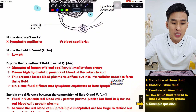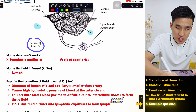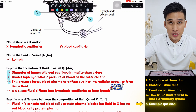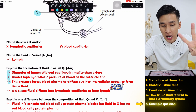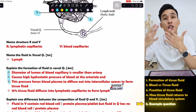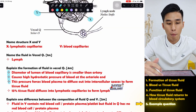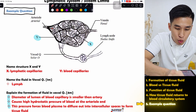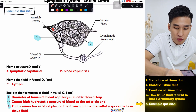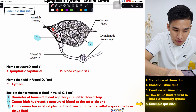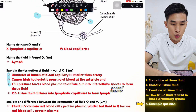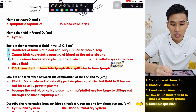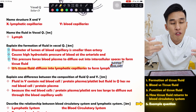For the question about formation of fluid in vessel Q — how do I form lymph? First you have to mention how tissue fluid is formed: the diameter size difference causes high hydrostatic pressure, forcing fluid out. Once forced out, tissue fluid is formed. Then you mention that the 15% of tissue fluid that diffuses into lymphatic capillaries forms the lymph. That is the fourth point in your answer.